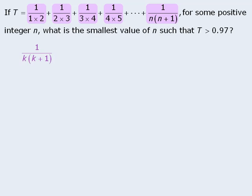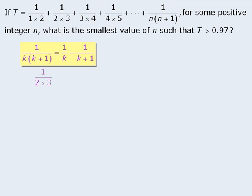Also notice that we can take fractions in this form and rewrite them as 1 over k minus 1 over k plus 1. For example, 1 over 2 times 3 can be rewritten as 1 over 2 minus 1 over 3. Notice that the left-hand side here simplifies to be 1 sixth. And to simplify the right-hand side, we will first rewrite the two fractions with a common denominator of 6 and then subtract the numerators to get 1 sixth.